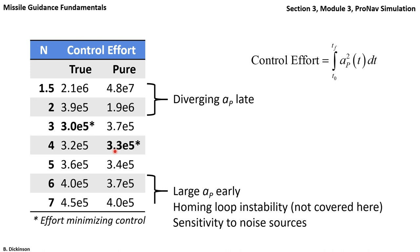For large values of N, we saw large acceleration command early in the engagement. Same concern about control effector limits. And while we won't cover it here, as N increases, the homing loop can actually become unstable as other subsystems are introduced back into the homing loop, and we become sensitive to other sources of noise present in those subsystems.